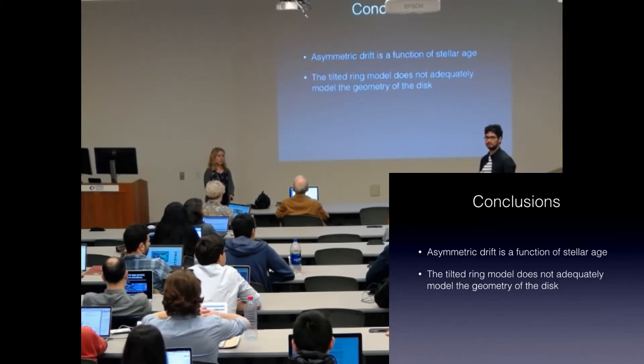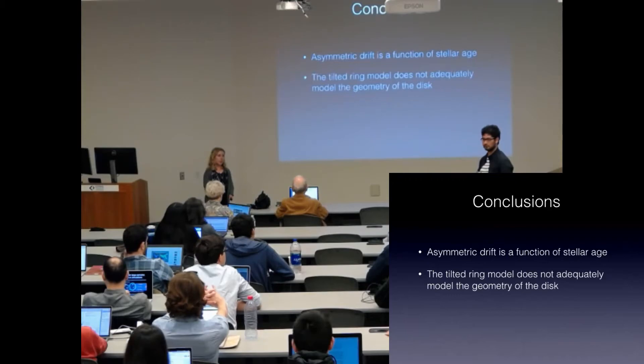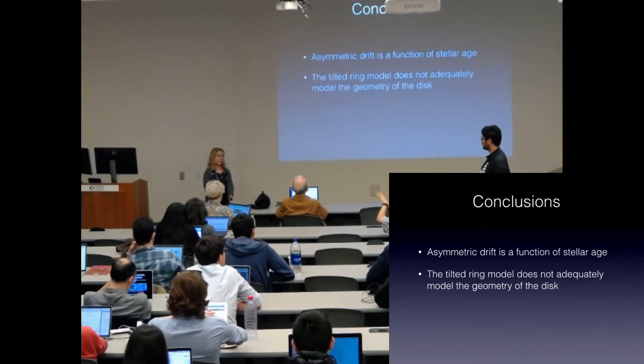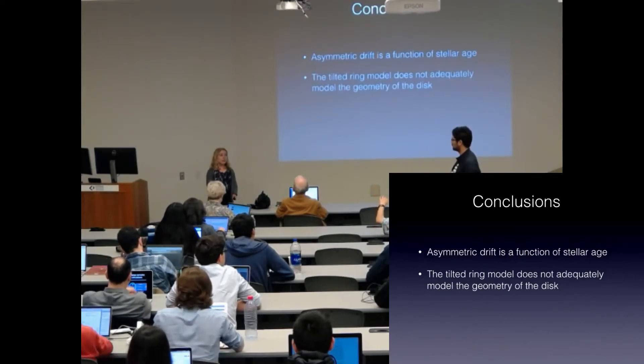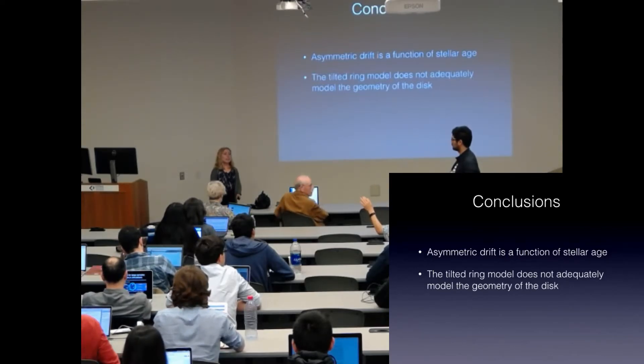Could you clarify what you mean by the complexity of the geometry? Do you mean there are little warps and things of that kind within the disk structure that's different for the gas and the stars? Is that correct or something else?